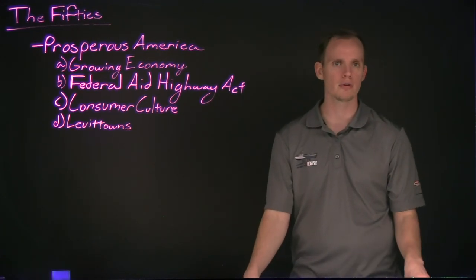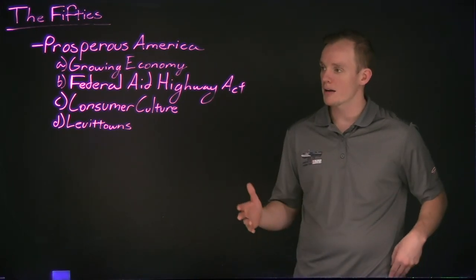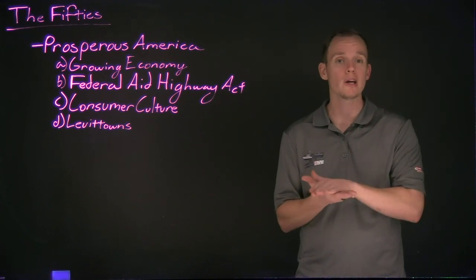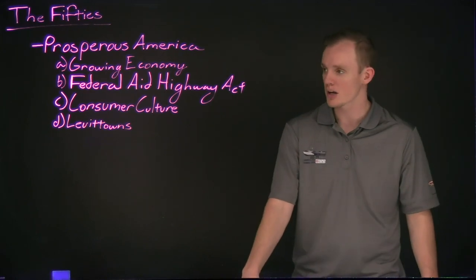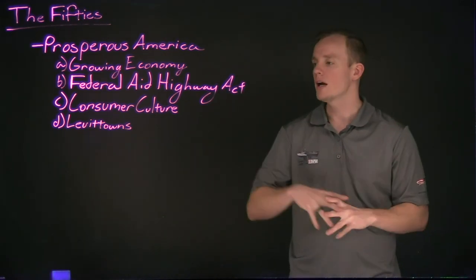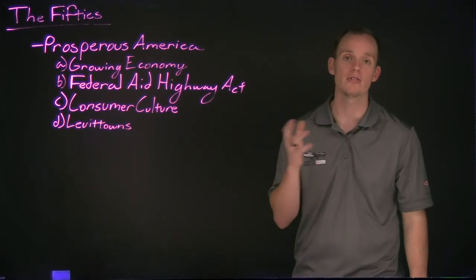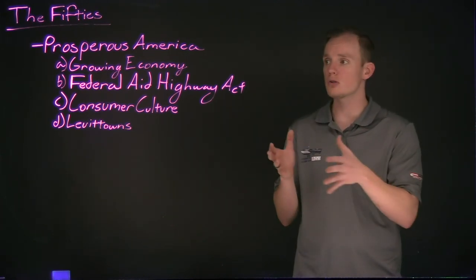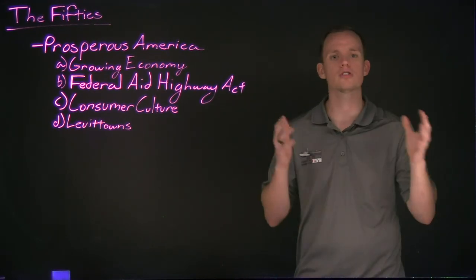Levittowns would be established by William and Alfred Levitt, who would establish the first Levittown on Long Island in the late 1940s. They developed houses very similar in layout, made of cheap material, quickly constructed, and relatively affordable for middle class and working class Americans. When this first Levittown opened up, all the houses would sell out — over 40,000 individuals would move in. Following that, Levittowns would begin to pop up all across the nation, and we'll start to see that Americans will begin to move to the suburbs. Suburbia is going to come to represent this prosperous America, this growing middle class, and American notions of freedom during this period.